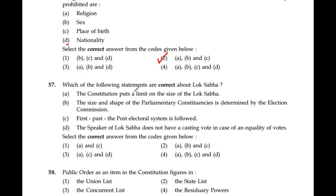Question number 57: Which statements are correct about Lok Sabha? The constitution puts a limit on the size of the Lok Sabha — correct. The size and shape of parliamentary constituencies is determined by the election commission — not correct. The first-past-the-post electoral system is followed — correct. The Speaker of Lok Sabha does not have a casting vote in case of equality of votes — not correct. So A and C are correct; option 1 is the answer.